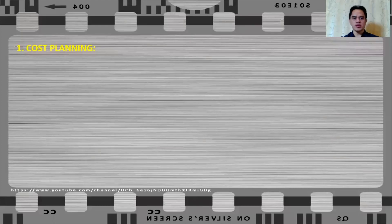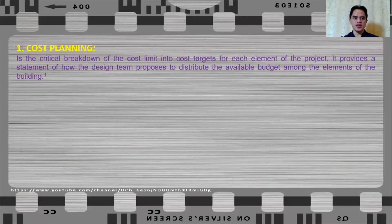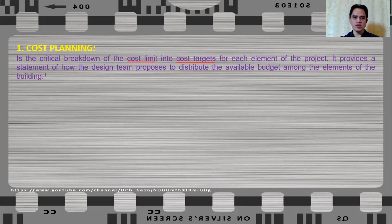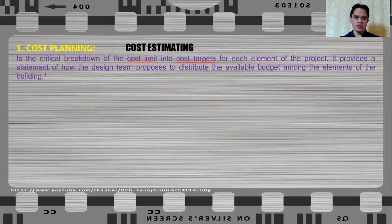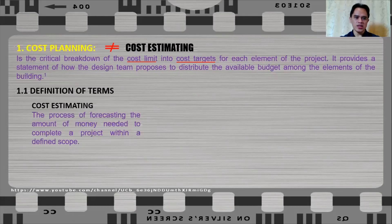Let us begin by defining what is cost planning. Cost planning is defined as the critical breakdown of cost limit into cost targets for each element of the project. It provides a statement on how the design team proposes to distribute the available budget among the elements of the building. We have to remember that cost estimating is not equal to cost planning, because cost estimating is the process of forecasting the amount of money needed to complete a project within a defined scope, while cost planning is the distribution of this estimated amount of money.